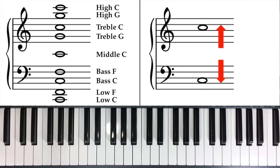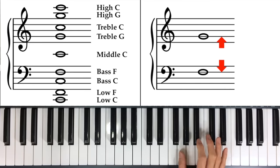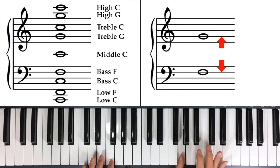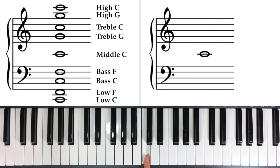And then within the clefs, it's inverse. So you have your treble C, which is three lines from the bottom of treble. And you have your bass C, which is three lines from the top of bass. And then from there, you have your treble G, which is two lines from the bottom. And you have your bass F, which is two lines from the top. And then right in the middle, you have your middle C, which looks very similar in the treble and the bass clef.